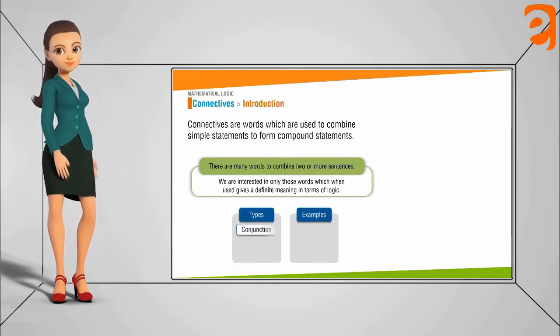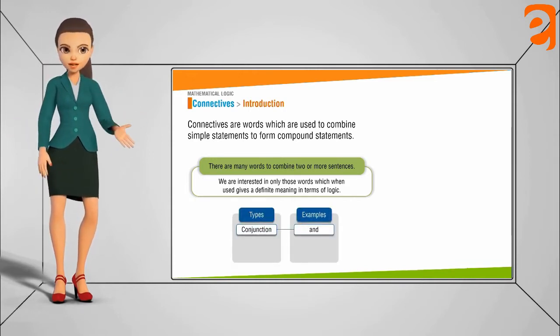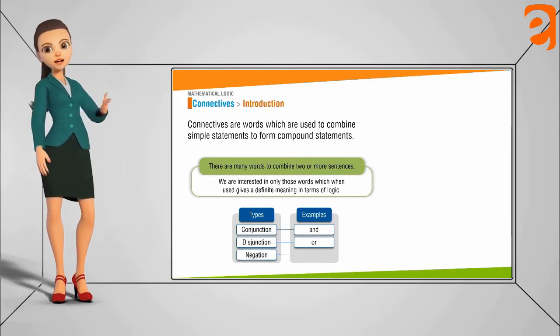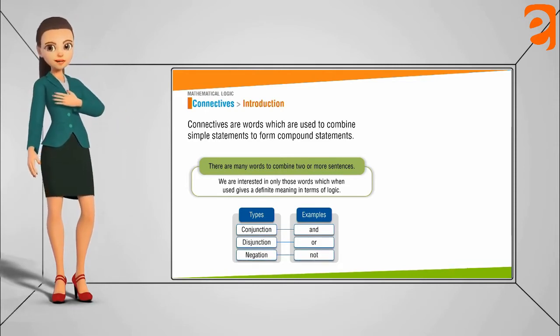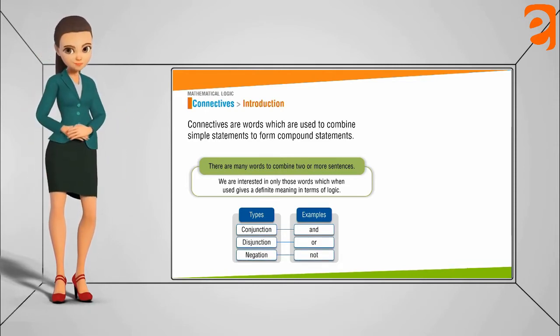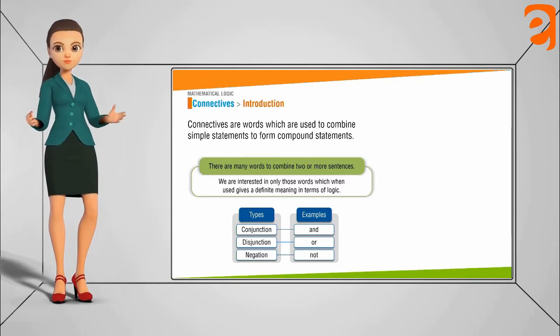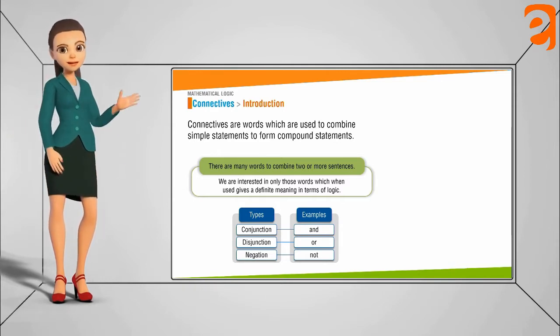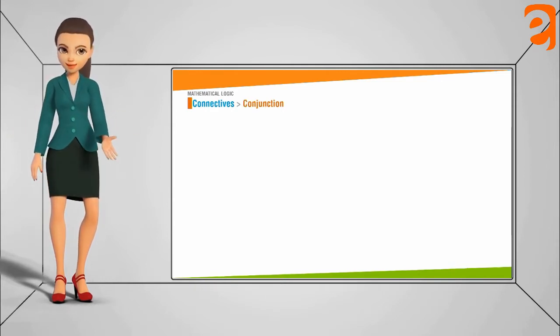And these words are: 'and', 'or', and 'not'. 'And' is called conjunction, 'or' is called disjunction, and 'not' is called negation.